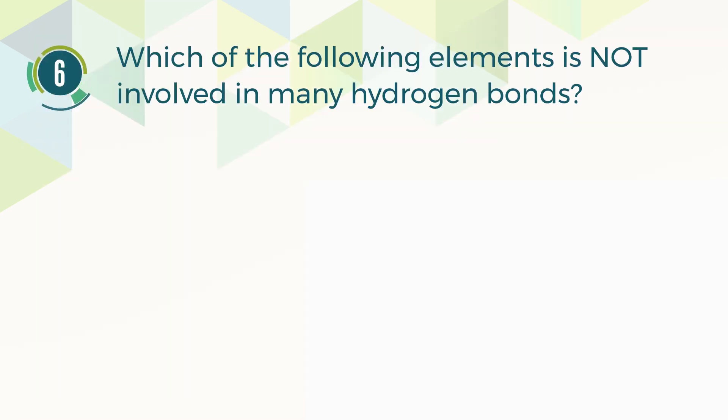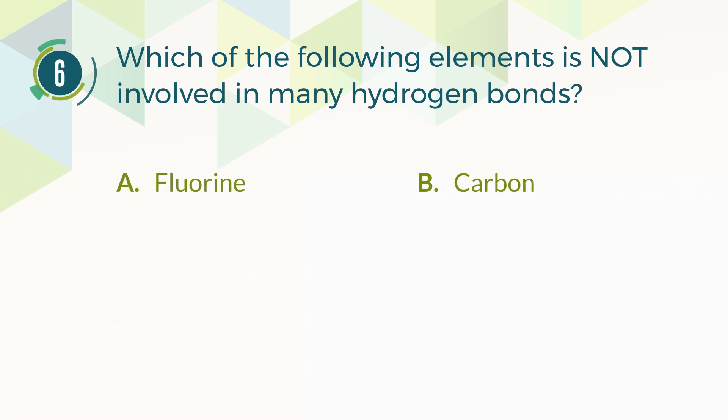Number 6. Which of the following elements is not involved in many hydrogen bonds? A. Fluorine. B. Carbon. C. Oxygen. D. Nitrogen.